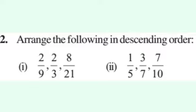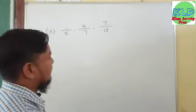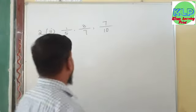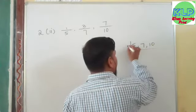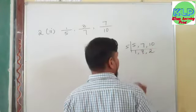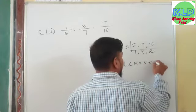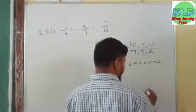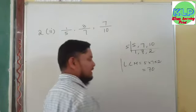The second part of question number 2: arrange 1/5, 3/7, and 7/10 in descending order. We need the LCM of 5, 7, and 10. Dividing by 5: we get 1, 7, 2. The LCM is 5 into 7 into 2, that is 70. The LCM of 5, 7, and 10 is 70.